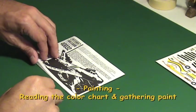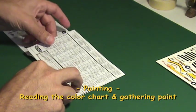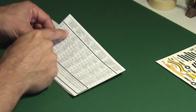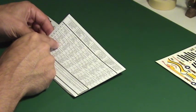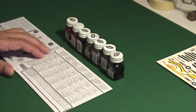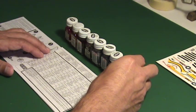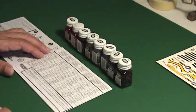There is one more thing you must do before starting to build your model. Read the color chart listed on the instructions or the model box and gather all the paint required.